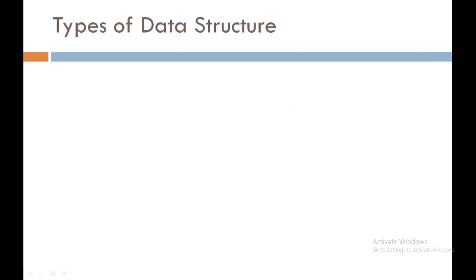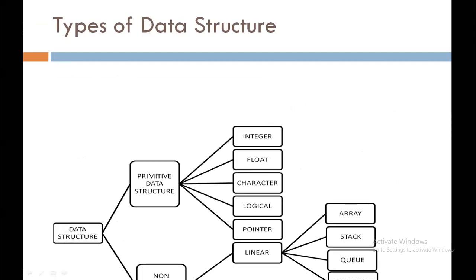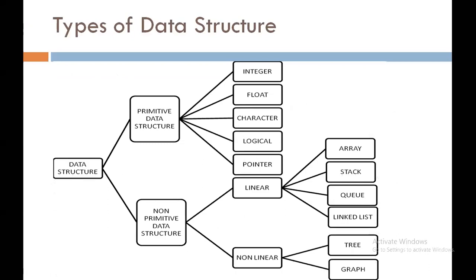Next topic is types of data structure. Data structure is divided into two main types. First one is primitive data structure and second one is non-primitive data structure. Primitive data structure is divided into five types: integer, float, character, logical, and pointer.